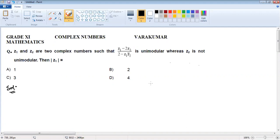The question on the screen: Z1 and Z2 are two complex numbers such that (Z1 minus 2Z2) divided by (2 minus Z1 Z2 bar) is unimodular, whereas Z2 is not unimodular. Find the modulus of Z1.